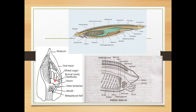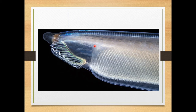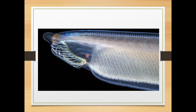The movement creates a water current. At the bottom of the vestibule there is a circular sphincter muscle called the velum. In its center there is a small aperture opening into the pharynx, and that opening is called the enterostome, which is surrounded by a series of ciliated tentacular processes.